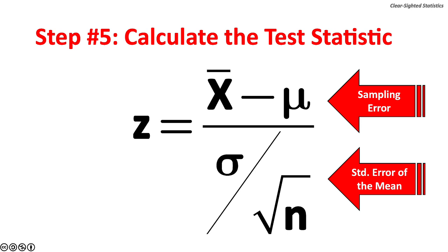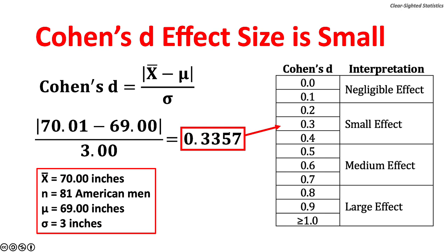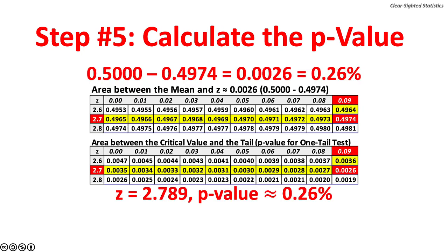Step 5: Calculate the test statistic. The formula is sampling error — the sample mean minus the population mean — over the standard error of the mean, which is the population standard deviation over the square root of n. The value of the test statistic z equals 2.789, found by (70.01 − 69) / (3 / √69). The Cohen's D effect size is 0.3357, which is a small effect. If the effect size were negligible (below 0.2), we should be concerned that this test is overpowered, meaning the sample size is too large and it is nearly impossible not to reject the null hypothesis.